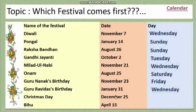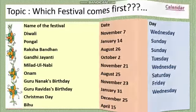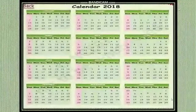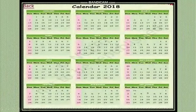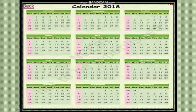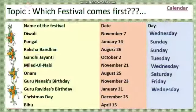Christmas comes in December — December 25th. Let's see what day December 25th is. December and 25th — here is your 25th date — Tuesday. So your answer is Tuesday.